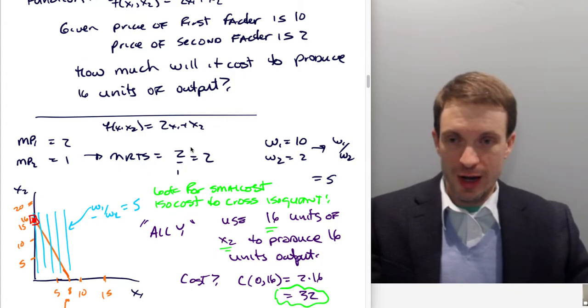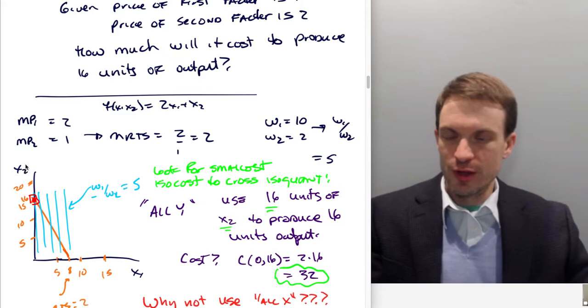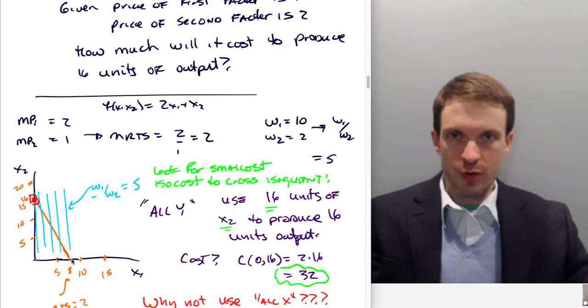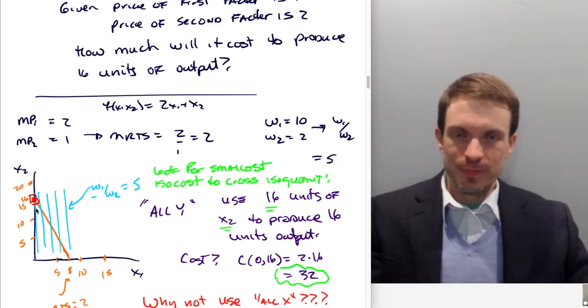So we're comparing an isoquant with a slope of 2 to isocost with a slope of 5. We're going to look for the smallest isocost to cross the isoquant. Let me first draw the picture. I've actually kind of drawn the picture carefully, we have factor 2, factor 1, and then I've drawn an isoquant with a slope of 2. And if we use only input 2, we will get 16 units of output, which is what we're desiring.